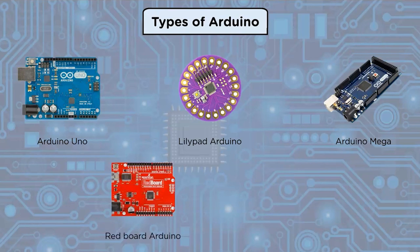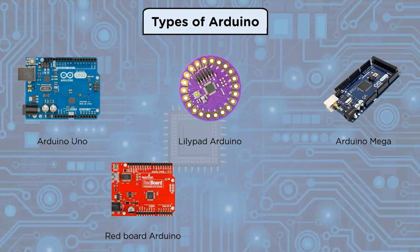The Redboard Arduino can be programmed via the Arduino IDE using a Mini-B USB connector. It will run on Windows 8 without requiring changes to your security settings because of the USB chip used. It's more stable and fully flat on the back, making it easier to integrate into your projects.